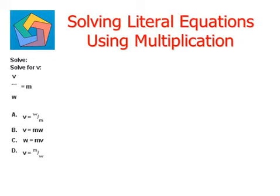The first one says solve for V, and we are given the equation V divided by W equals M. Solve for V means we have to find out the value of V in terms of the other two variables.